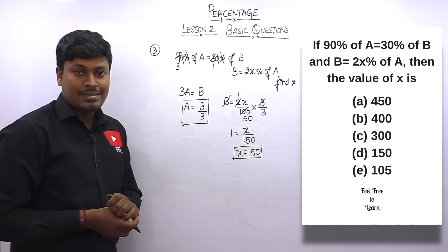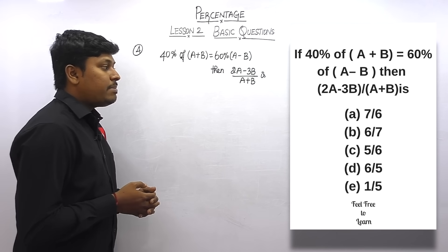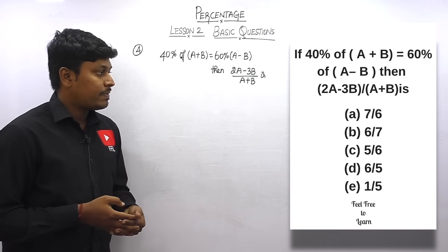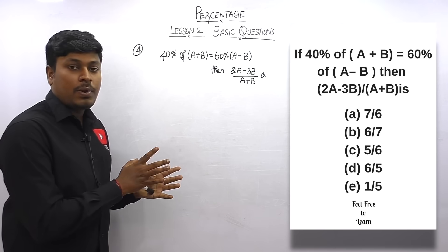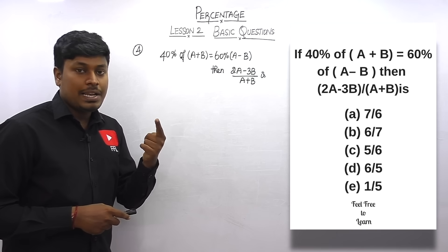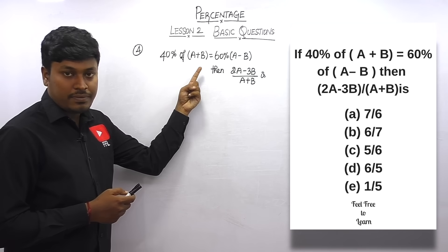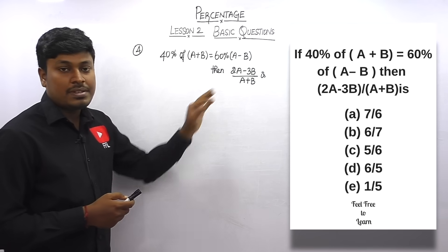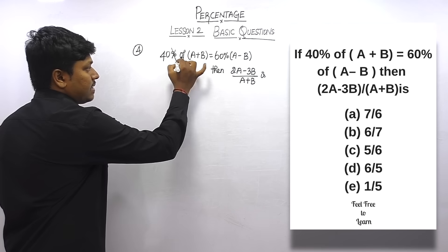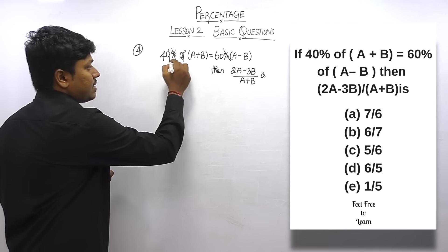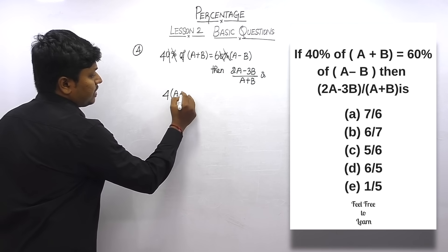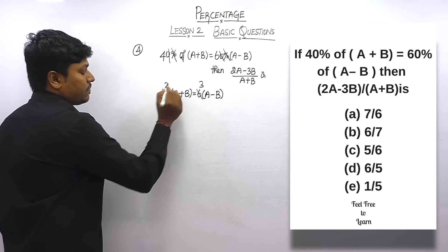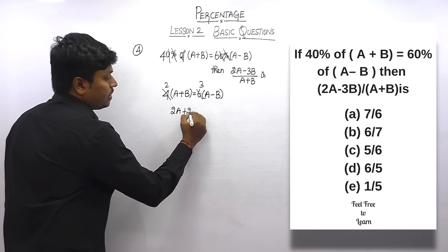Question number four: if 40% of (a + b) = 60% of (a − b), find (2a − 3b)/(a + b). Cancelling percentages and zeros: 4(a + b) = 6(a − b). Dividing by 2: 2(a + b) = 3(a − b), giving 2a + 2b = 3a − 3b.